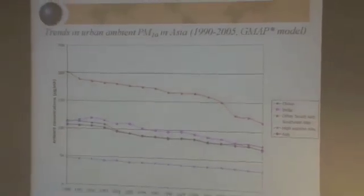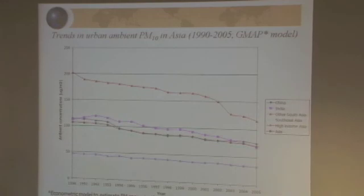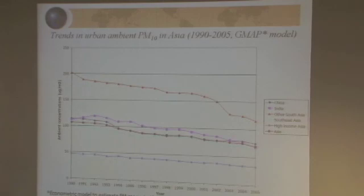Looking more generally across Asia, we see similar patterns. From 1990 to 2005, there were staggering linear increases in both primary energy consumption and transportation fuel consumption across all locations in Asia. Yet at the same time, when we look at cities, we've generally seen decreases in levels of air pollution. These are estimates from a World Bank model, because we don't have measurements everywhere — particularly for particulate matter, one of the pollutants we're most concerned about in terms of human health impact.